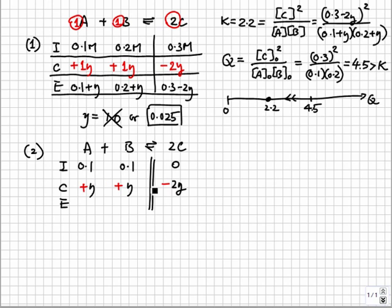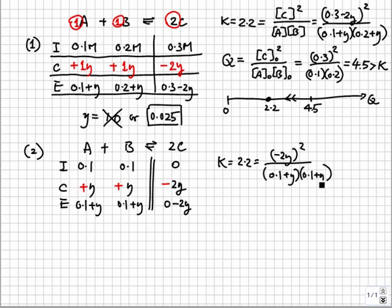Pull the stoichiometric coefficients down from the balanced equation. Apply the changes to the initials, and put these back into the expression for K. We take the square root of both sides and solve for Y.